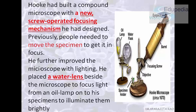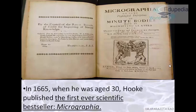Because of this technique and the water lens in his microscope, he was able to focus most of the light from an oil lamp and hence see his specimen under the microscope. What he saw he published in a book named Micrographia. Mr. Hooke was just 30 years old when he published the first ever scientific bestseller — the Micrographia. He was a genius.